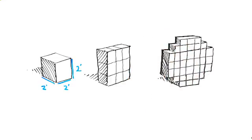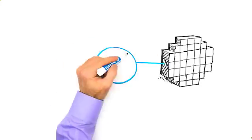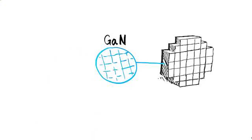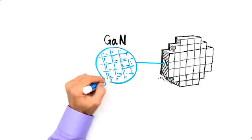Inside each RMA is gallium nitride. This semiconductor technology increases a radar's power, reduces its size, and requires less energy to use it.